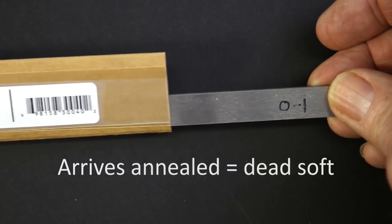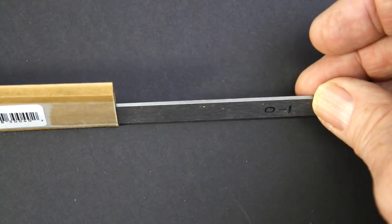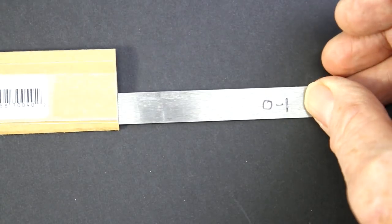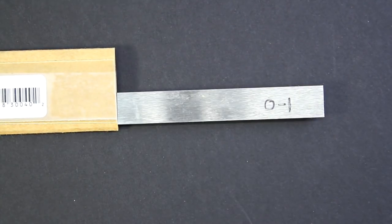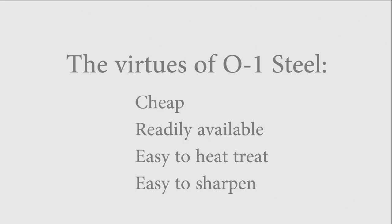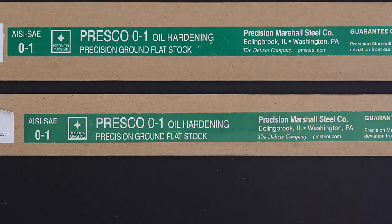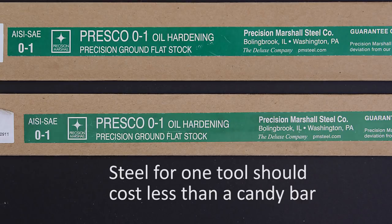Why O1 steel? There are dozens of other fine tool steels. However, O1 is cheap and readily available in a wide range of sizes. It is one of the easiest steels to heat treat and it's easy to sharpen. A blank for one tool will cost you about a dollar.